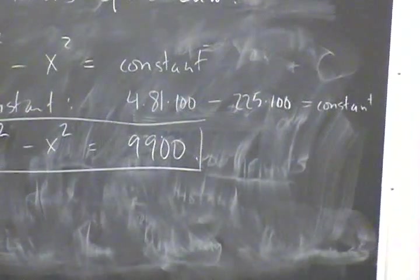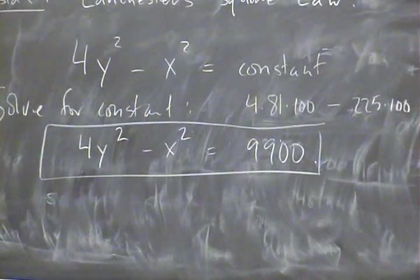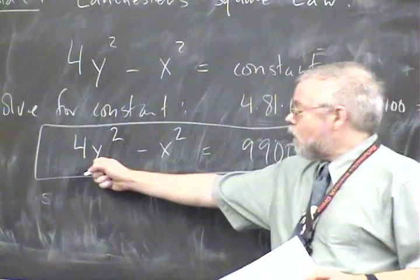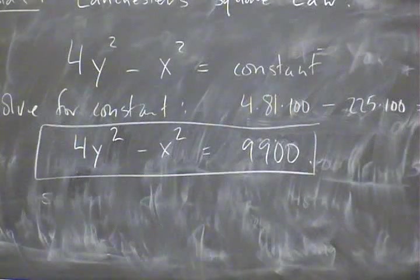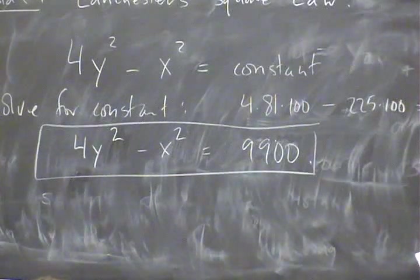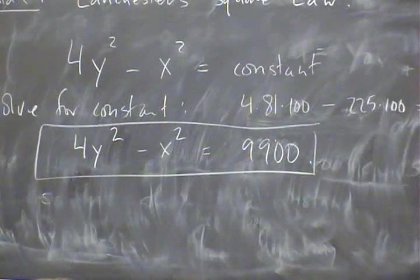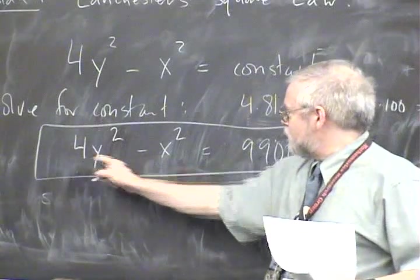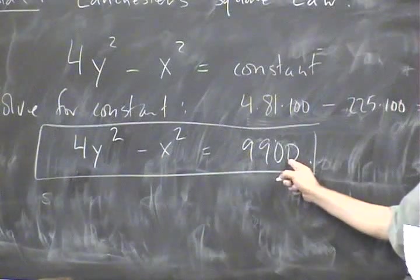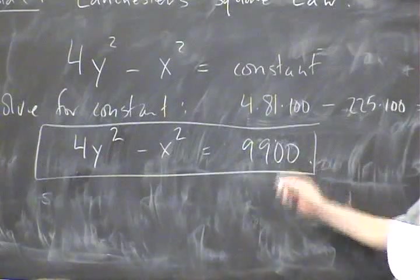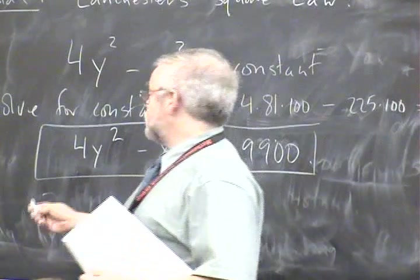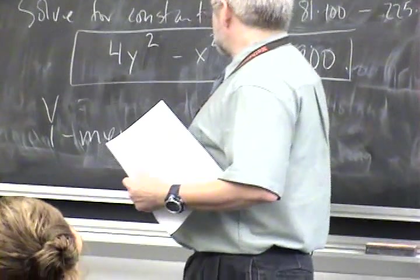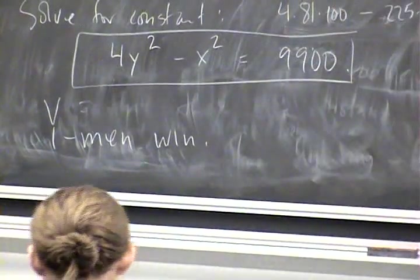Now remember, Y is shorthand lazy notation for Y(t) and X is shorthand lazy notation for X(t). Can Y ever be 0? Can Y(t) ever be 0? Can Y-men lose? If this is never 0... that doesn't make sense. So there's one loser and one winner. Y-men win.